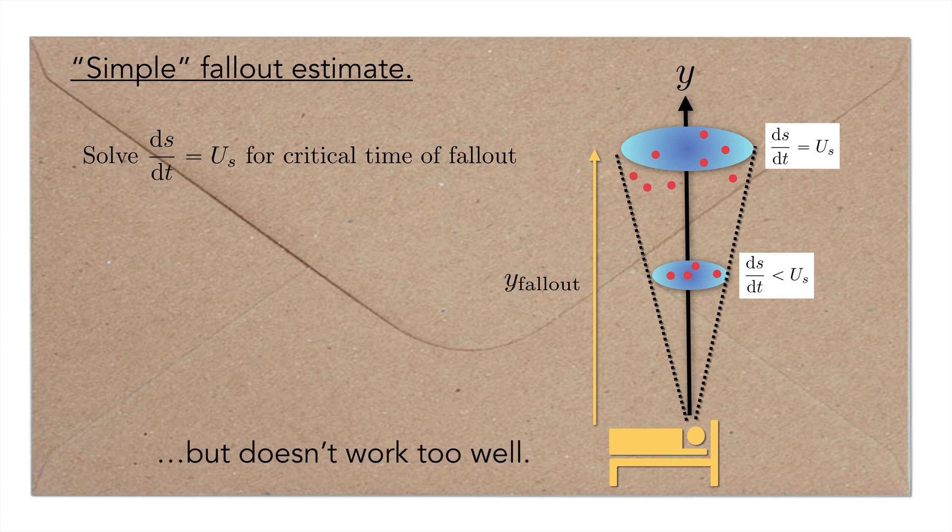Now unfortunately, this estimate doesn't work too well for the following reason. As the cloud rises, the particles within its interior begin to move in these circular paths shown here. Basically, this means that your velocity ds/dt is not actually a good measure of the cloud velocity everywhere, especially near the boundaries. The particles can still settle out despite the cloud moving on average at a speed greater than the Stokes settling speed.